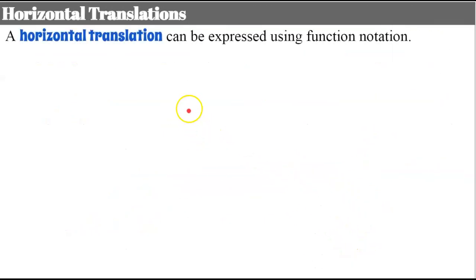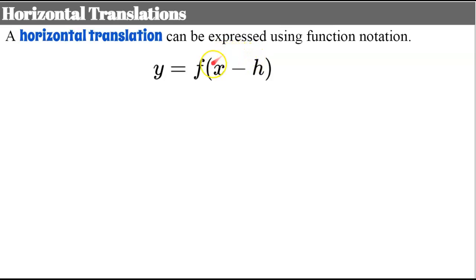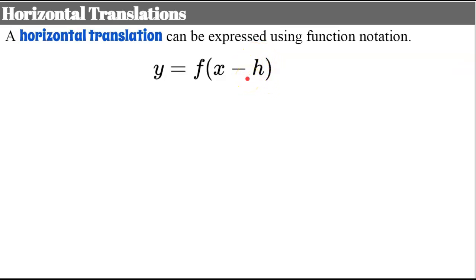Horizontal translations can be expressed using function notation. Y equals F of X is what you're used to. If we change it to the input being X minus H, where H is a constant, it's now a horizontal translation expressed in function notation. H is the common letter we use in algebra to refer to horizontal translations when we affect the inputs.